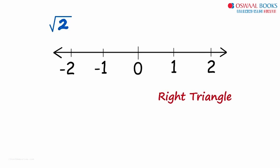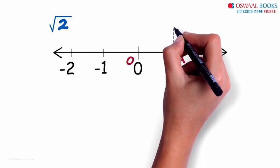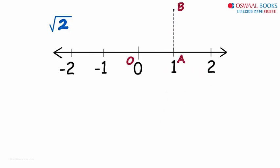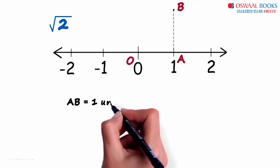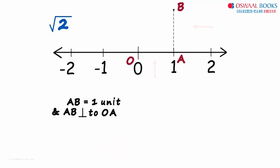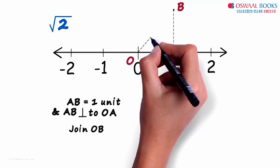We need to make a right triangle with one unit as the base. Let OA be the base of that triangle. We also want its height to be one unit long. Let's draw the height AB like this. We just drew AB equal to one unit perpendicular to OA. Both these lengths equal one unit. Now all we have to do is join OB like this.